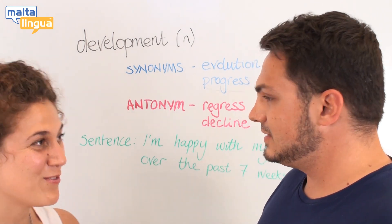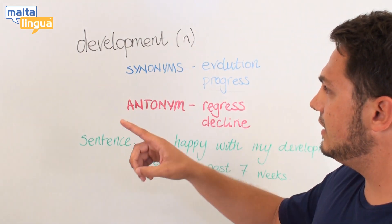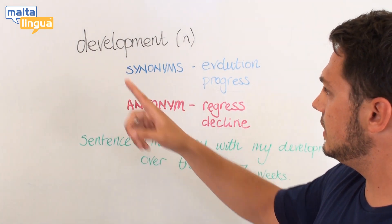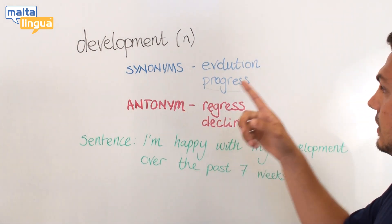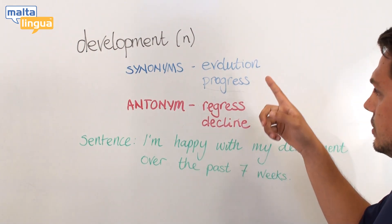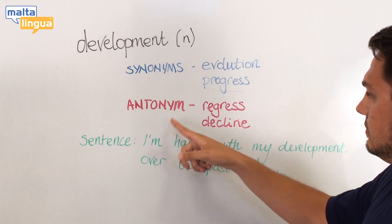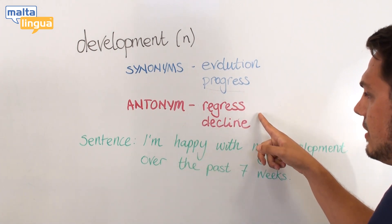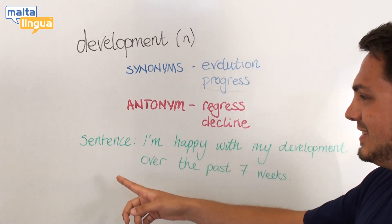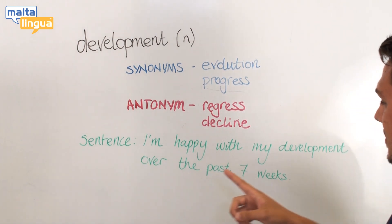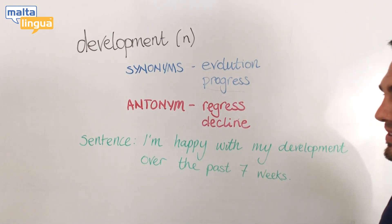So shall we explain your word? Do you want to go ahead? Yes. The word that I have chosen is development. And the synonyms of development could be evolution and progress. And the antonyms are regress and decline. And the sentence that I chose for this word is: I'm happy with my development over the past seven weeks.